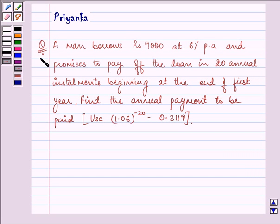Hello and how are you all today? The question says a man borrows rupees 9000 at 6% per annum and promises to pay off the loan in